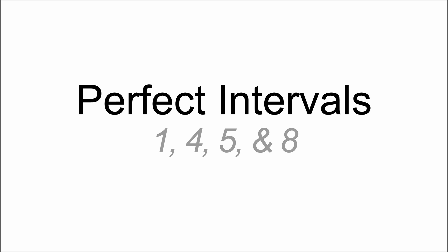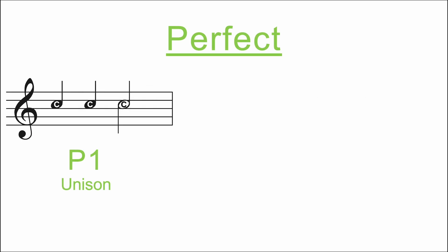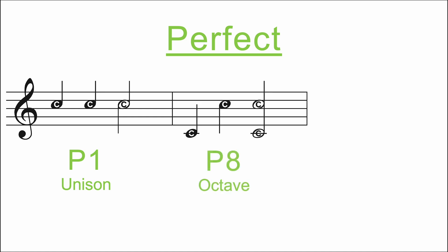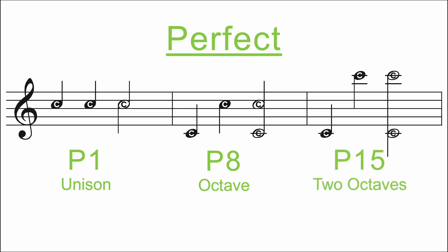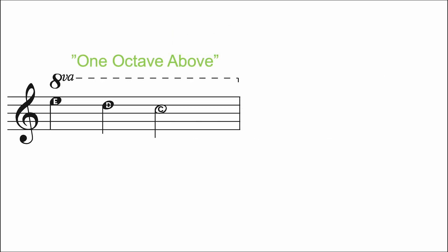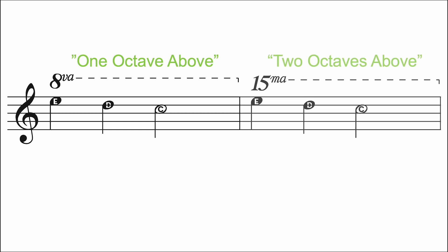Let's start with our perfect intervals: firsts, fourths, fifths, and eighths. Our ones are really just our unison note — we're staying on that C, the same note. Our octaves are the eighths — 'oct' standing for eight. We could also go beyond that and have two octaves, which gives us a perfect 15th. That's why you might see '8va,' meaning play one octave higher, or '15ma,' meaning play two octaves above. But for now, let's just focus on things up to an octave.